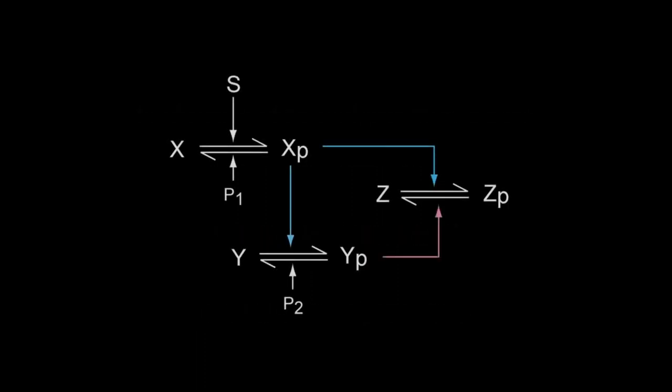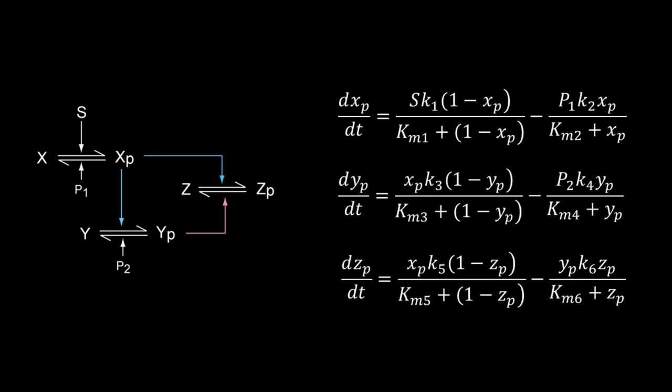Let's check out the adaptive behavior of an incoherent feed-forward using a model. Here is an incoherent feed-forward - it has three sets of reversible enzymatic modifications. You can imagine xp, yp, and zp as phosphorylated proteins. S is the input, zp is the output. Here is our system of ODEs.